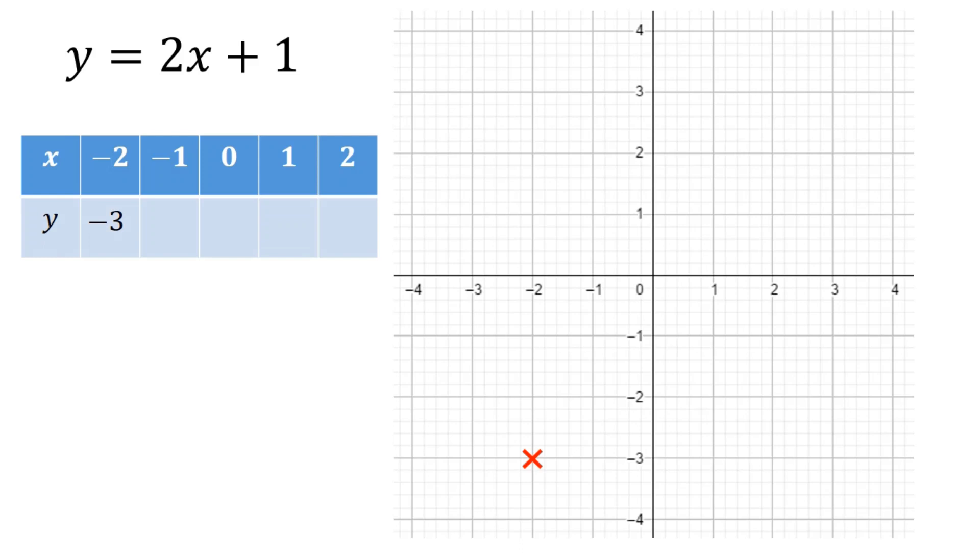If we do the same again, if x is -1, then we've got two lots of -1, plus 1 is -1. So we're going -1, -1, plot them there. If x is 0, then you've got two lots of 0 plus 1, which is 1. And we can plot that coordinate 0 in, 1 up.